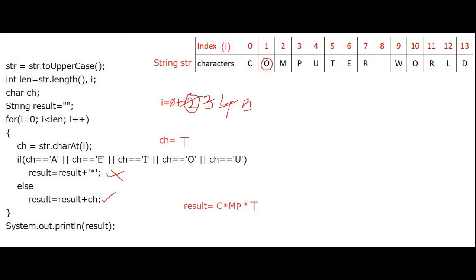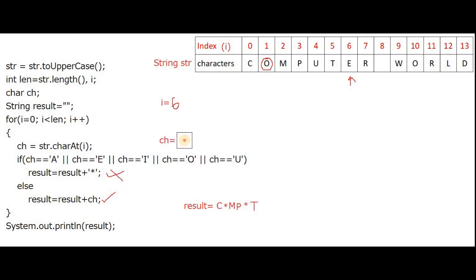Next iteration i++, so i is now 6. Position 6 is pointing to 'E'. With the help of the charAt method, E is extracted. The value of CH is now capital letter E. Checking whether it is a vowel — yes, E is a vowel. So the if-part will execute: result = result + star. With the last value of result, one star will be stored, giving C*MP*T*.